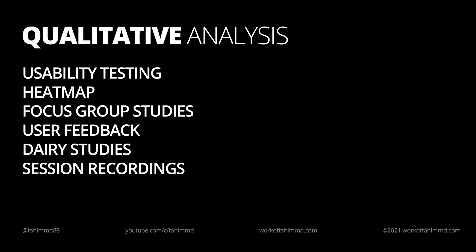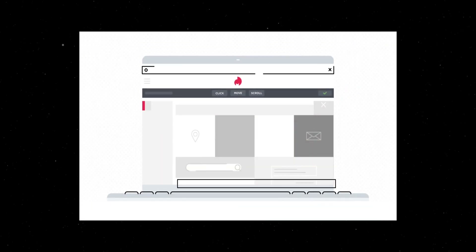Qualitative analysis gives behavioral analysis and helps understand user behavior, such as usability testing, heat maps, focus group studies, user feedback, diary studies, and session recordings. My favorite tool for this category is Hotjar. Hotjar is free — they have a free platform and a paid membership as well. With the paid membership you can unlock more features, and it supports websites with a lot more traffic. But if your website has around 500 to 1,000 visits per month, Hotjar is a great tool to use.